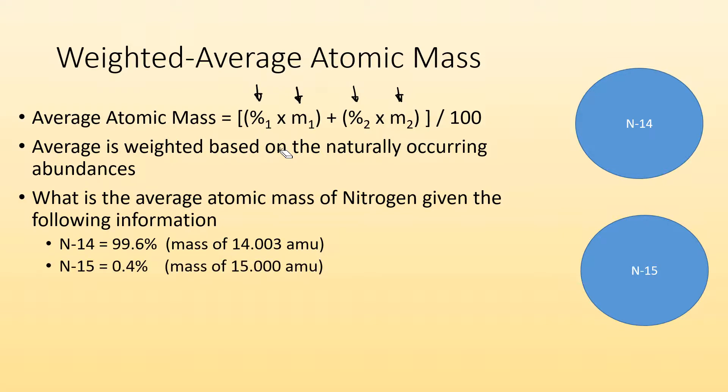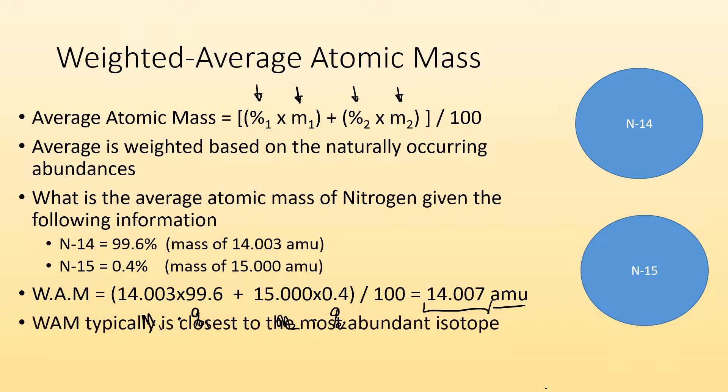For nitrogen 15, it's only 0.4% and has a mass of that. So when we do the math, again, it's just the percent of the first one times the mass of the first one plus the percent of the second one times the mass of the second one, and then divide that by 100 and you get 14.07 atomic mass units as your average mass.